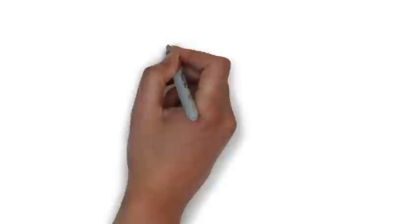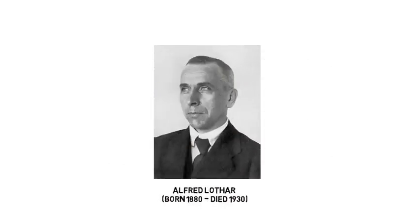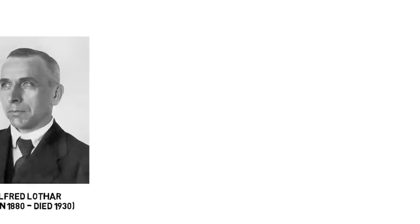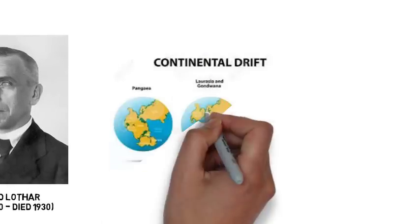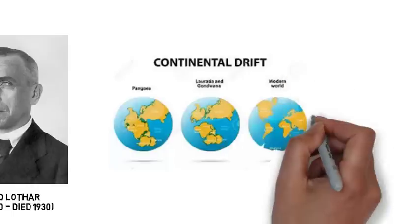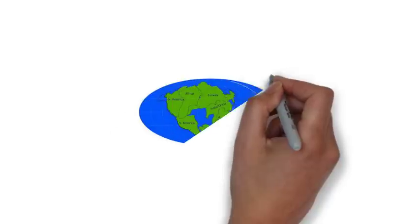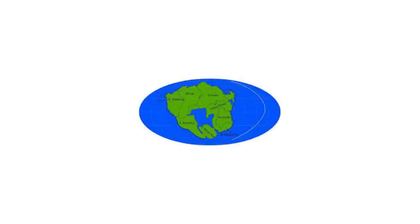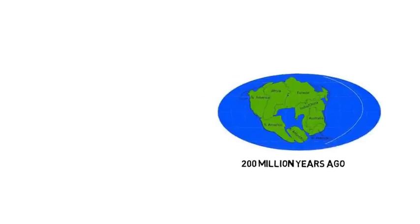In 1912, the German geophysicist and meteorologist Alfred Lothar, born 1880 and died 1930, introduced the Continental Drift Theory. This theory implies that the six continents were merged into one large continent many millions of years ago, which has slowly been broken up into six parts. According to the theory, the six continents separated from the supercontinent 200 million years ago, until they reached their current stage.